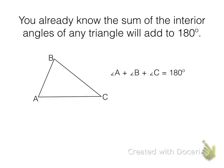You already know what the sum of the interior angles of triangles are. The angles of any triangle are 180 degrees. So this is already known. Just make sure — this is really, really important, that's why I put this slide in — all three angles of any triangle add up to 180 degrees.